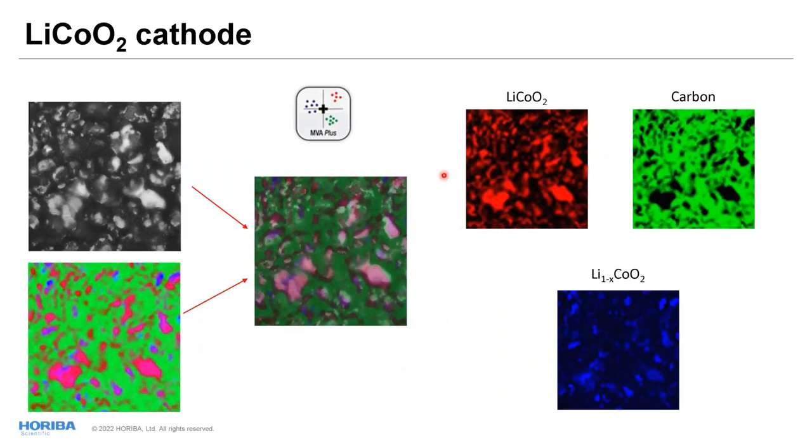Here is the picture. This is lithium cobalt oxide. This is carbon and deficient lithium cobalt oxide. To do the decomposition of this material, I use the MVA plus. It's a chemometric package integrated to LabSpec 6. You can use it very easily and visualize what happens here. On this picture, I just overlay colors. Here's the deficient part of the lithium oxide, the red is lithium cobalt oxide, and the green is carbon. You can see the distribution and you can clearly see what may happen with this.